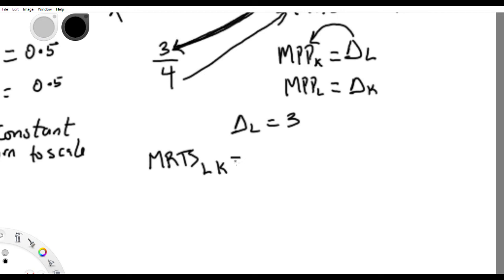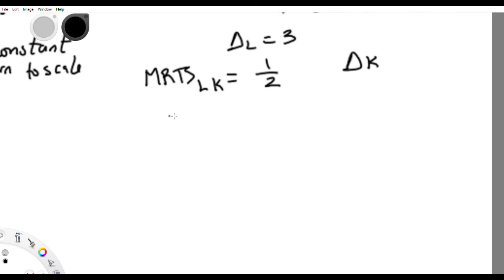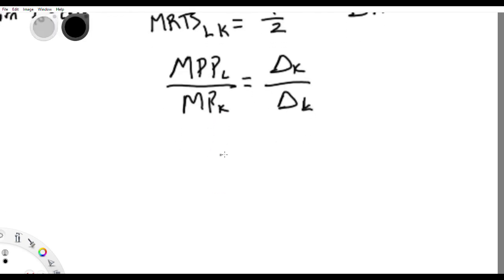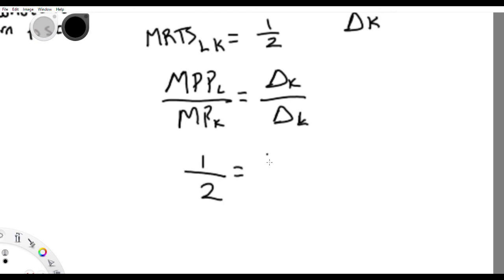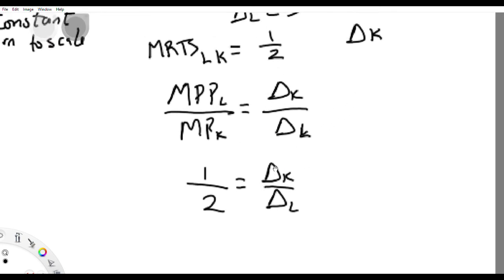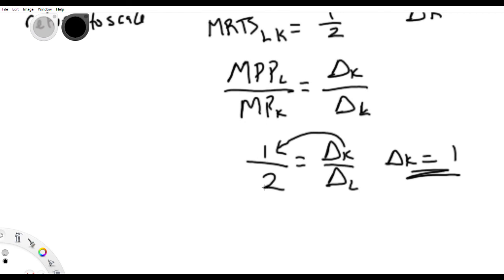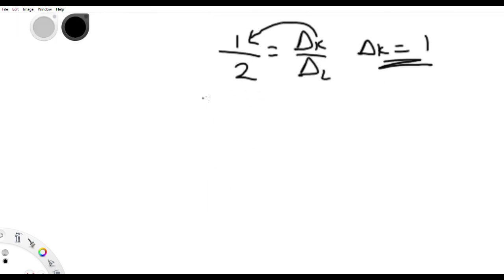For example, if MRTS L for K equals 1 over 2 and you're told to find change in K: remember MRTS L for K equals MP_L over MP_K, which equals change in K over change in L. Since MRTS equals 1/2, and change in K corresponds to the numerator, change in K equals 1. As simple as that.